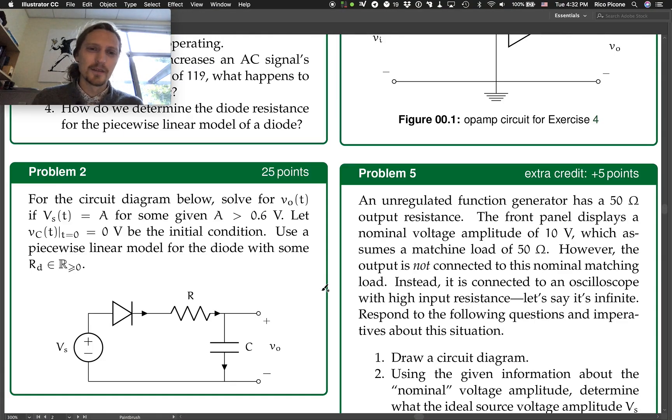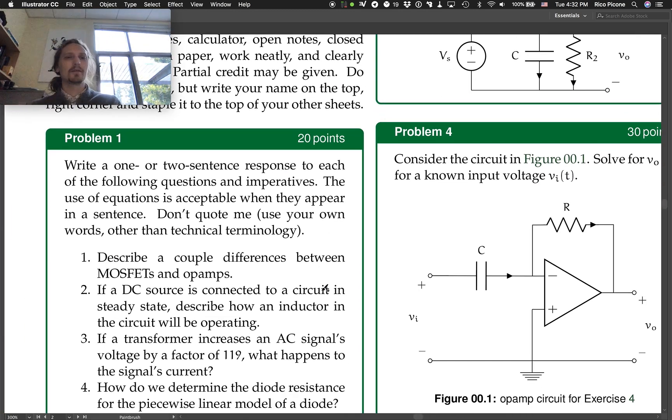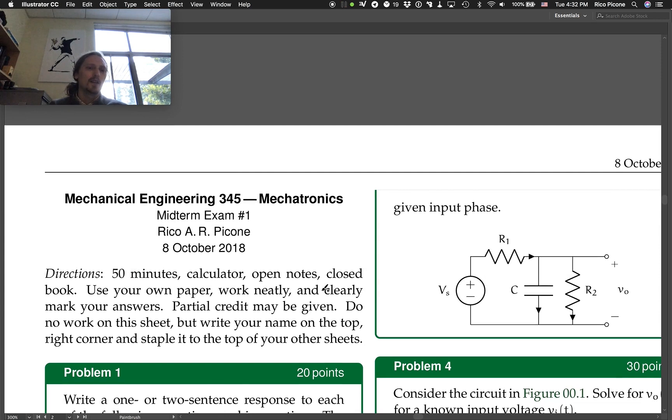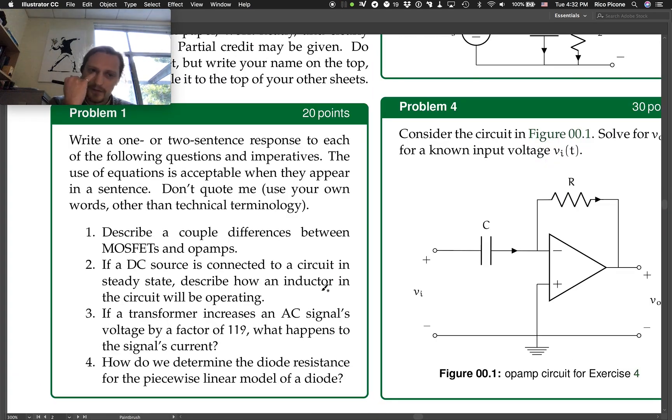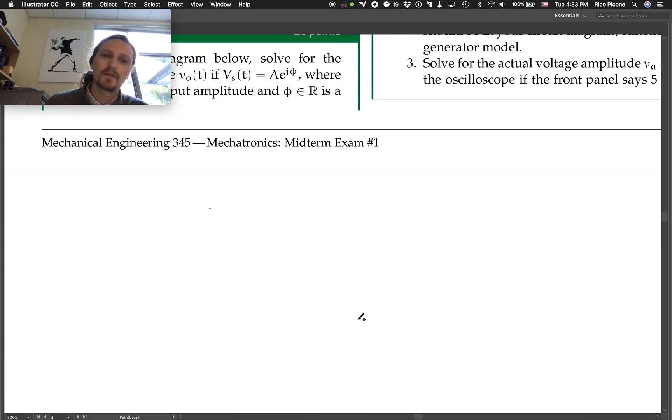Okay, so we're going to do some exam solutions. Problem one from the midterm exam is: write one or two sentences in response to each of the following questions and imperatives. Use of equations is acceptable when they appear in a sentence. Don't quote me, use your own words other than technical terminology. So the first part is describe a couple differences between MOSFETs and op amps.